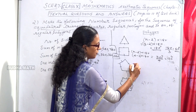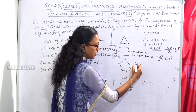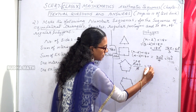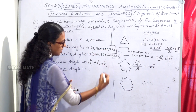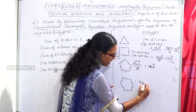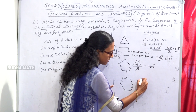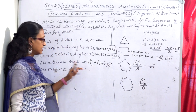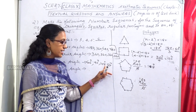For the pentagon: 540 divided by 5 = 108 degrees. Each angle of a pentagon is 108 degrees. For the hexagon: 720 divided by 6 = 120 degrees. So the one interior angle sequence for polygons is 60, 90, 108, and 120.